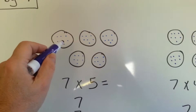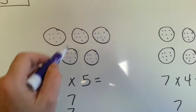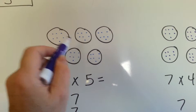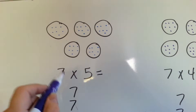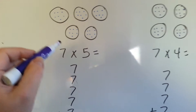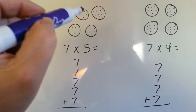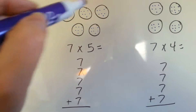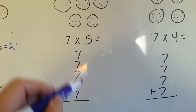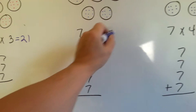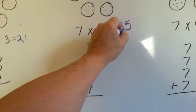Now we have 5 sevens: 1, 2, 3, 4, 5. There's 7 dots in each one. That means we have 7 times 5. It's the same thing as 7 plus 7 plus 7 plus 7 plus 7. 7 times 5 is 35.